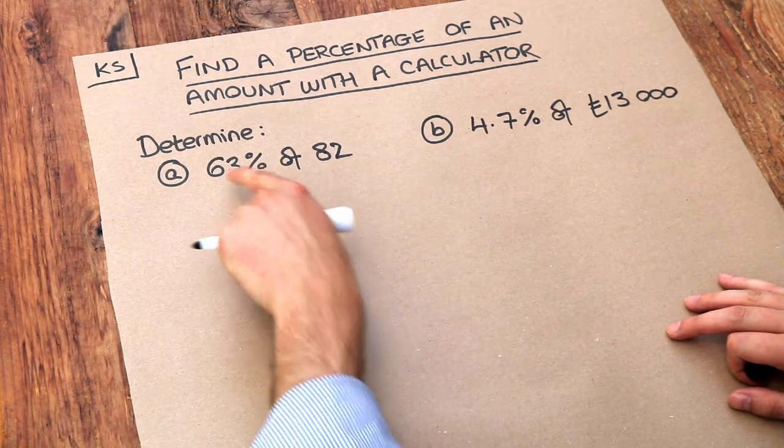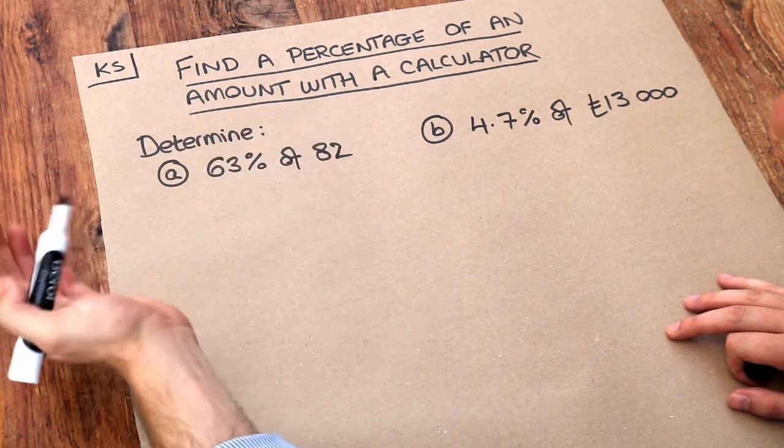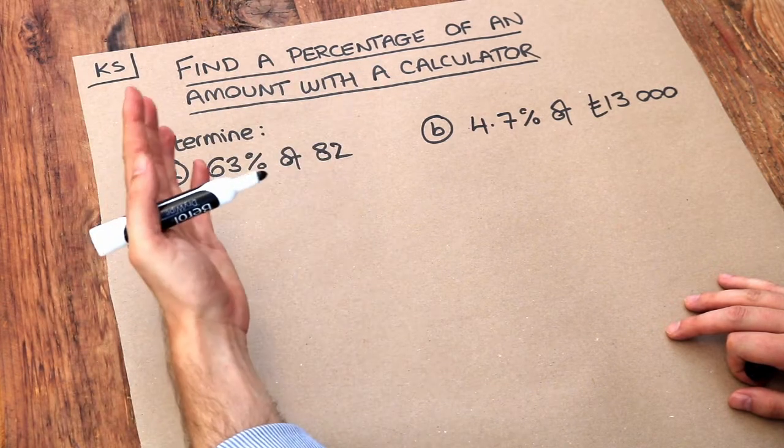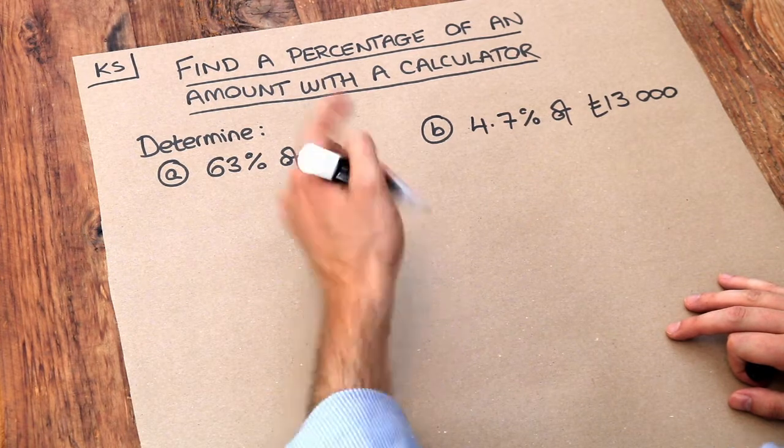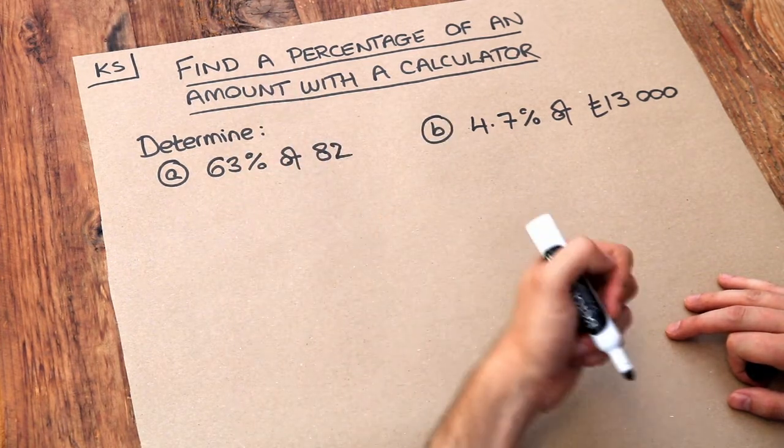Now let's think about it. 63% is roughly, say, 50%, and 50% of something is half of it. So half of 82 would be 41. So we're expecting the answer to be a bit more than 41.